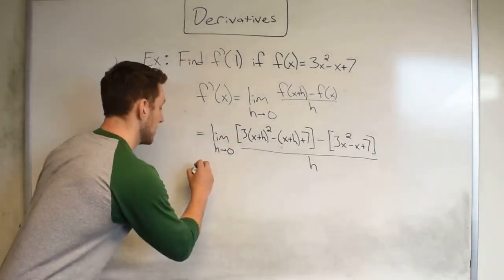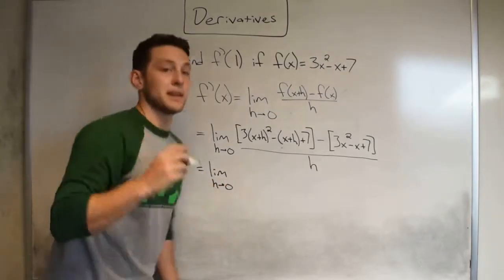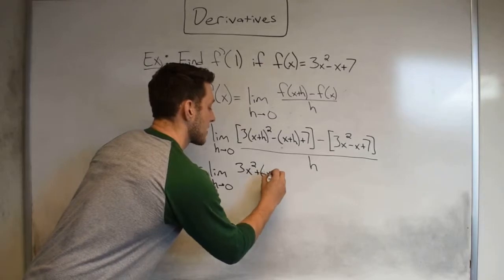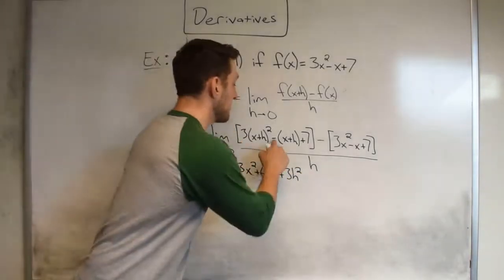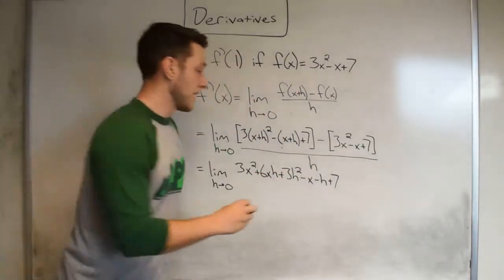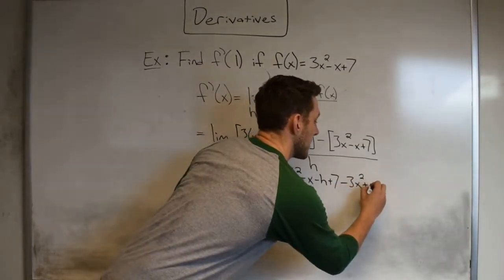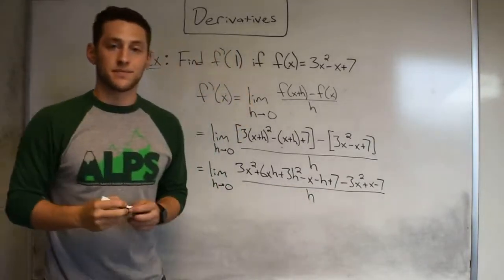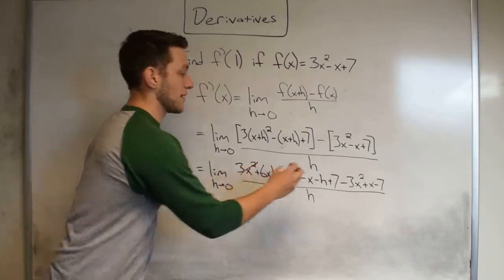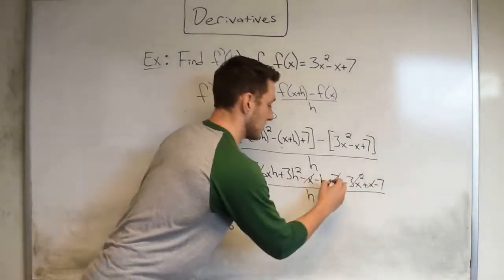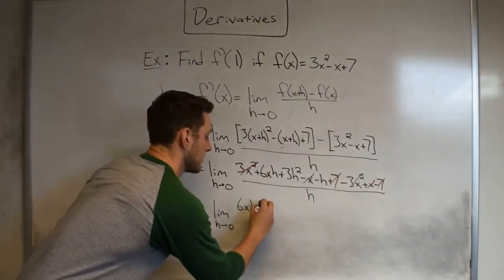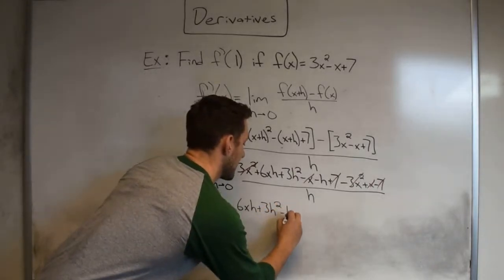Now, if you really stick your nose in it and do out the algebra, what it looks like we're going to land on will be the limit as h approaches zero of this guy right here will end up becoming a 3x squared plus 6xh plus 3h squared minus distributing in x minus h plus 7. Distributing in the negative right here minus 3x squared plus x minus 7. And yet again divide by h. Now what you'll see is that we get yet again a lot of cancellation out, which is important for us. For instance, the 3x squareds cancel, the x's cancel, and the 7's cancel. So what we are left with, if we look up top, would end up being a 6xh plus 3h squared minus h all divided by h.